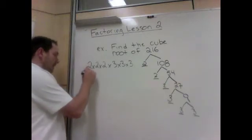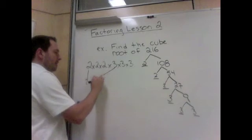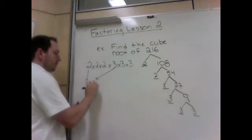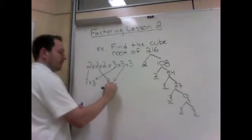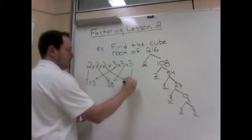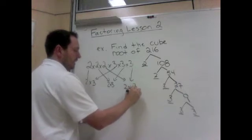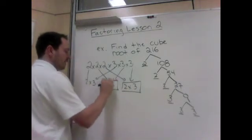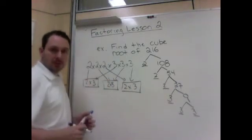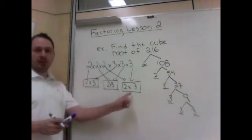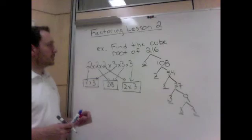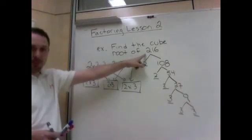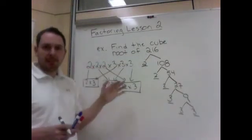So I'm going to take a 2 and a 3, a 2 and a 3, a 2 and a 3. And I have 3 identical groups. 2 times 3, 2 times 3, 2 times 3. So because I've made 3 perfectly equal groups, I know 216 is a perfect cube. So if the question asked if it's a perfect cube, I'd be done.